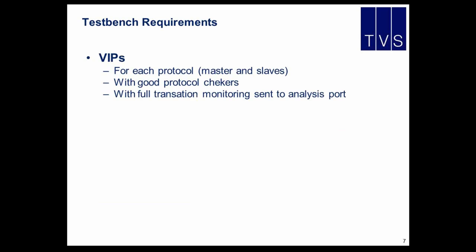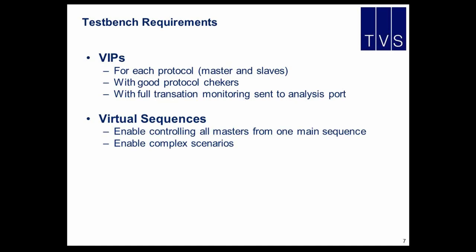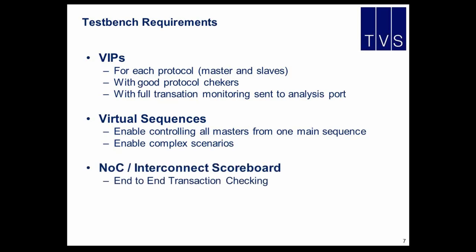In terms of test bench requirements, you typically need verification IPs for each of the protocols, which provides a good protocol check. You need a virtual sequence to actually control all the different processes, because you will have 10, 40, or 50 different masters to control. So you need to build a virtual sequence on top of your verification IPs. You also need a scoreboard to check that the transaction received at the slave interface is the one sent by the master, except that it might be in a different protocol — which leads to the concept of the interconnect scoreboard, slightly more complicated than a single scoreboard. And you need to do this standalone to verify the interconnect, or within the SOC to check the integration of the interconnect.